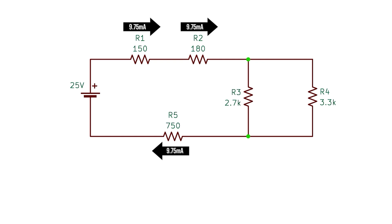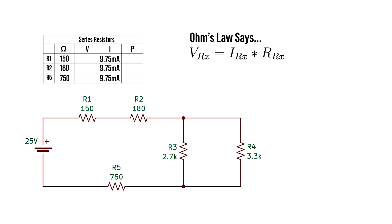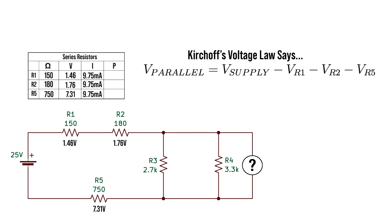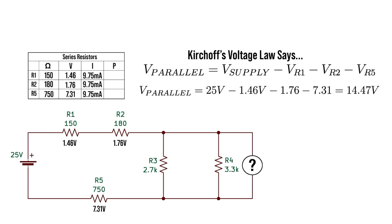All series resistors pass this 9.75 milliamps, so we can use Ohm's law to find the voltage dropped across each by multiplying the total current by each individual series resistor. So Vr1 equals total current times R1, Vr2 equals total current times R2, and Vr5 equals total current times R5. This only works for series resistors. For the parallel portion, we need to use KVL — add up the series voltages for Vr1, Vr2, and Vr5, then subtract that from the 25-volt source. The difference gives the voltage across the parallel circuit.